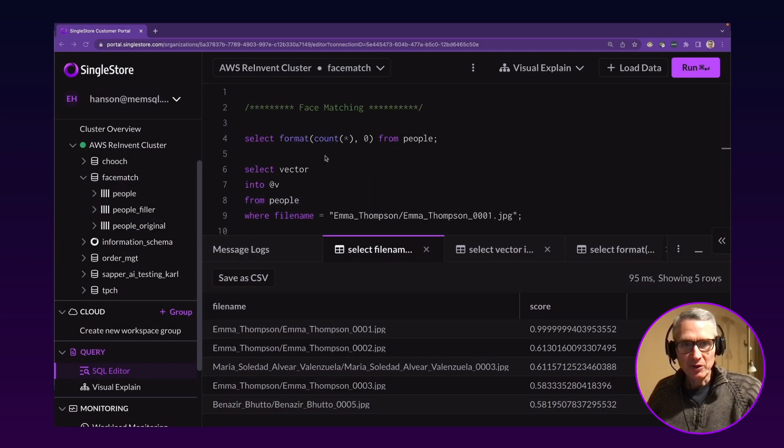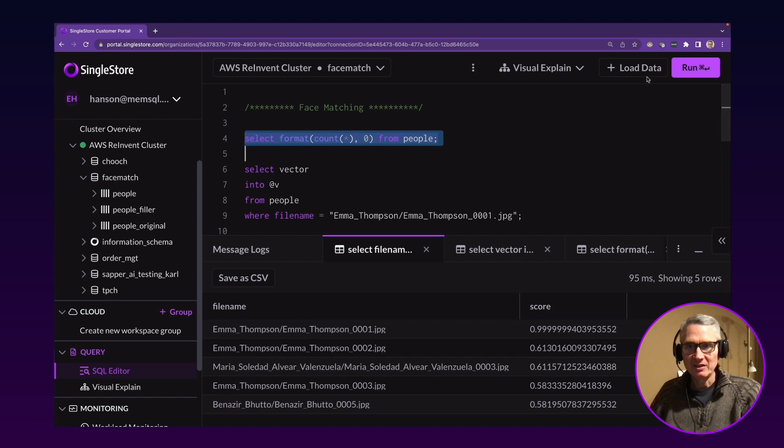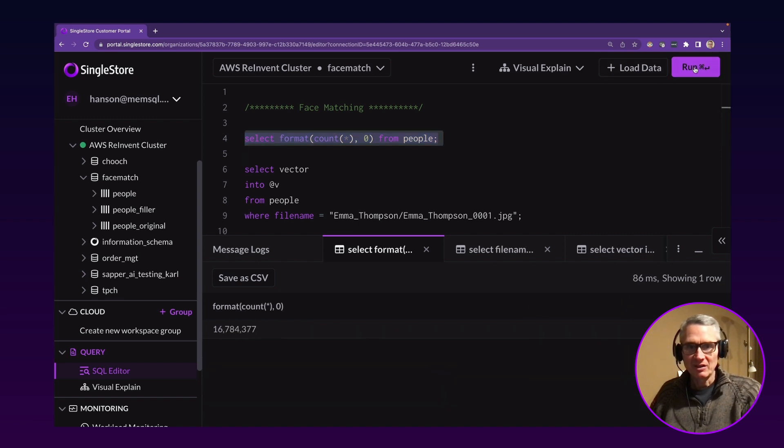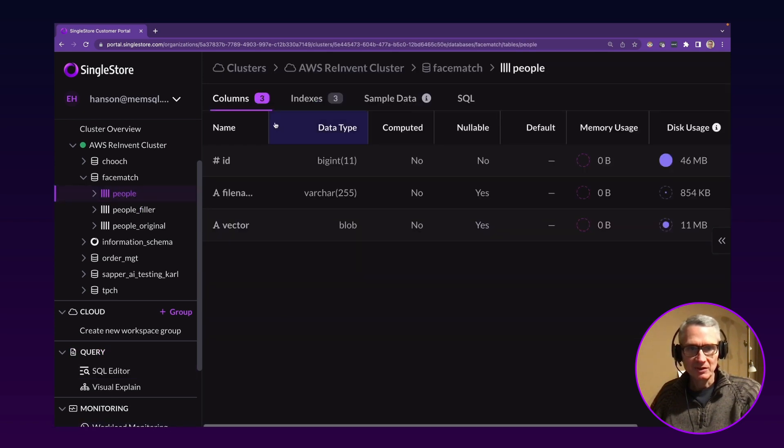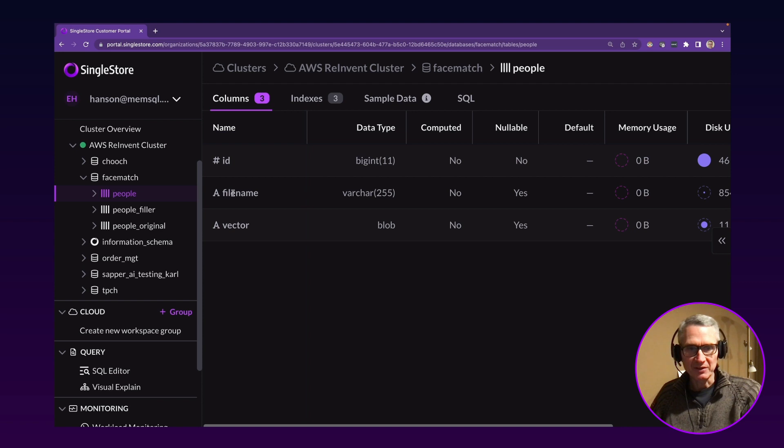So in this demo, I have loaded a table called people with records that contain file names and vectors that represent the picture stored in the file. There's 16,784,000 and some odd records in this table. The schema of the table looks like this. It's got an ID number, the file name, and the vector, which is a blob. This is going to be a 128 element vector. That's single precision floating point.